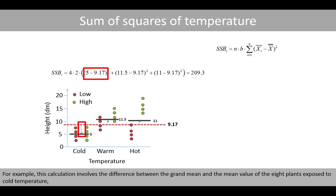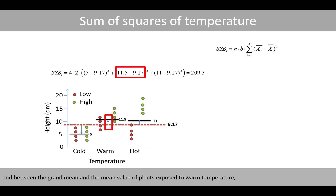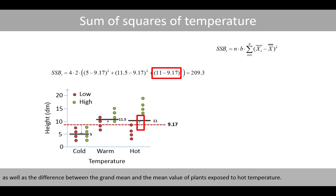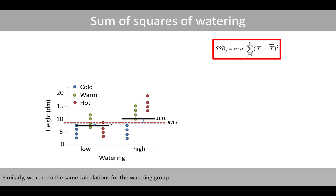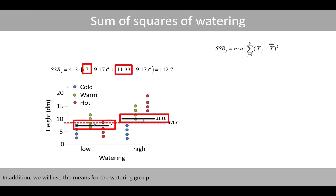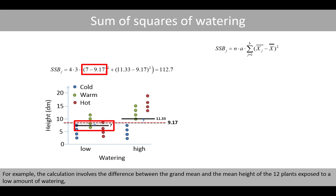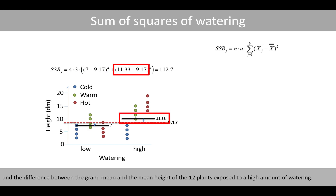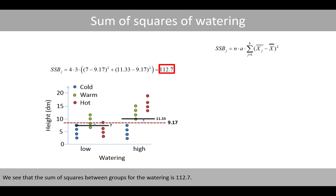This calculation involves the difference between the grand mean and the mean value of the 8 plants exposed to cold temperature, the mean value of plants exposed to warm temperature, and the mean value of the plants exposed to hot temperature. Similarly, we do the same calculations for the watering group. The equation now includes A, which represents the number of levels in the temperature group — since we have three different temperatures, A equals 3. The mean of the 12 plants receiving a low amount of watering is 7, whereas the mean of those receiving a high amount of watering is 11.33. The sum of squares between groups for watering is only 12.7.